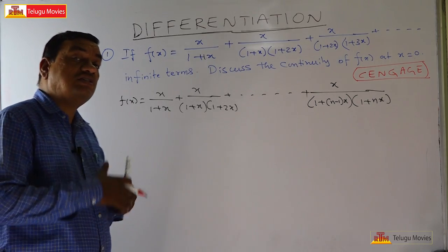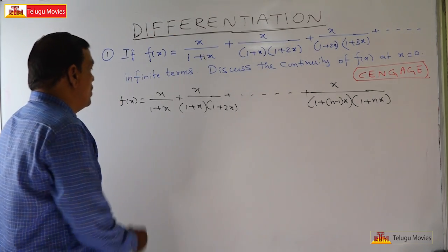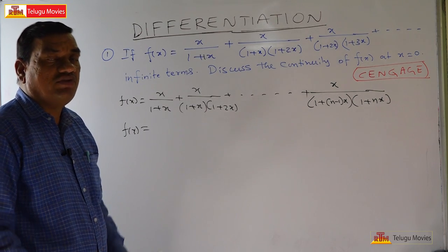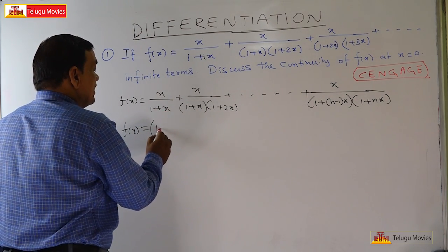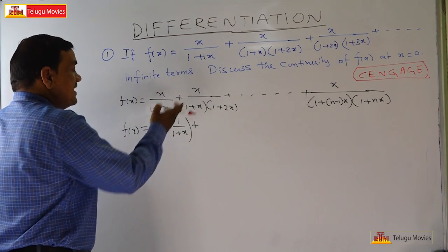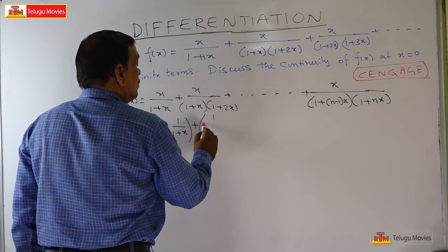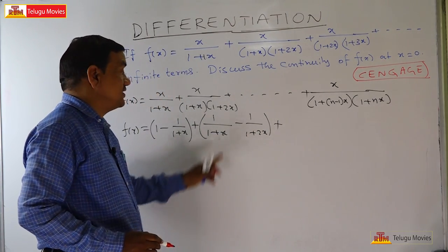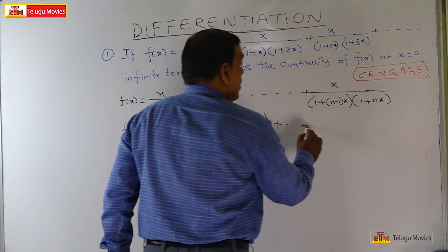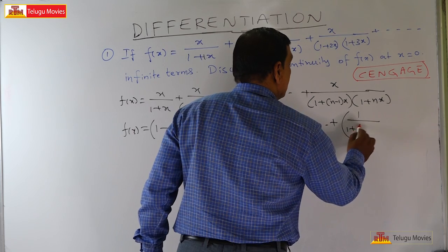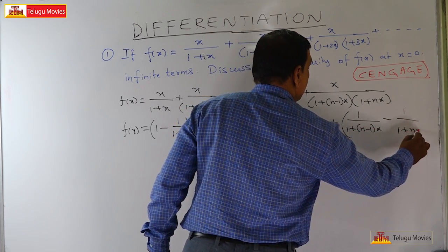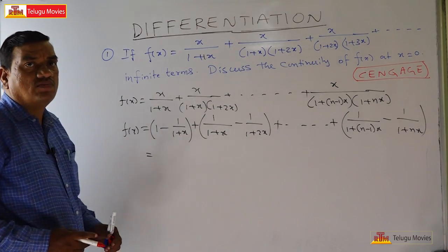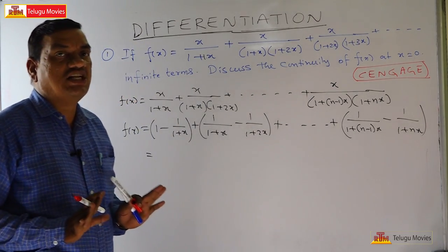I am first finding the sum to n terms, then I will find the sum to infinite terms. We simplify each term using partial fractions by observation: x/((1+(n-1)x)(1+nx)) = 1/(1+(n-1)x) - 1/(1+nx). This creates a telescoping series.